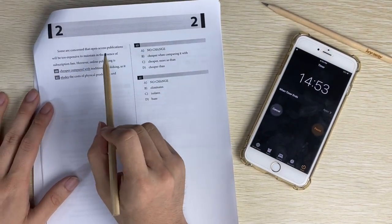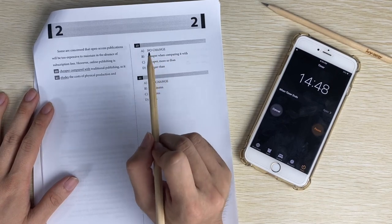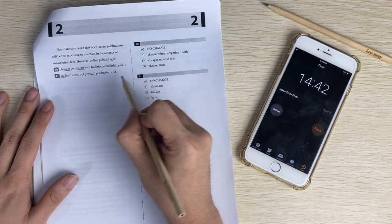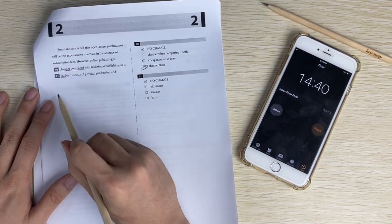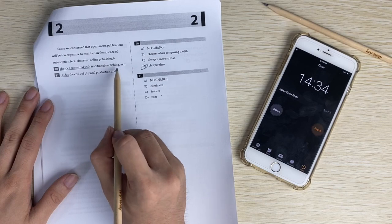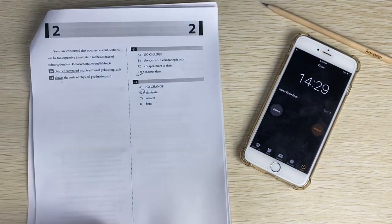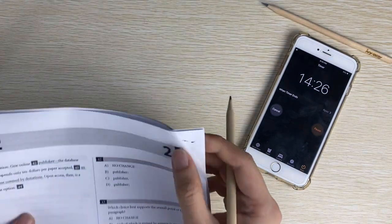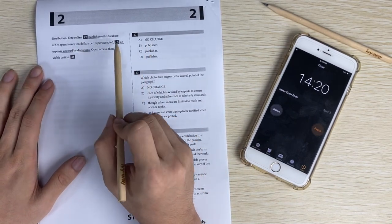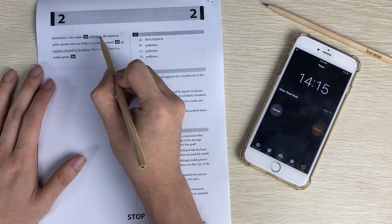Alright. Some are concerned that cheaper when compared with cheaper than. So comparison parallelism. Online publishing is cheaper than. Cheaper than, something is cheaper than something. Word choice. As it, online publish it takes out the eliminate. Number forty-one, online publisher, the database. That's, so it should be a comma to separate out these things.